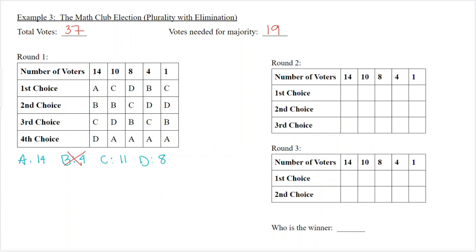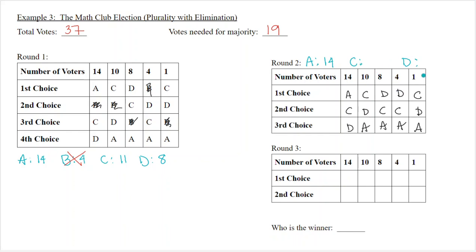Going into round two, I copy down the columns with Boris eliminated from each column and recount the votes. Alicia still has 14 first place votes, Carmen has 11, and Dave has 12. Nobody has 19 votes yet, so we eliminate the last-place person, which is Carmen.